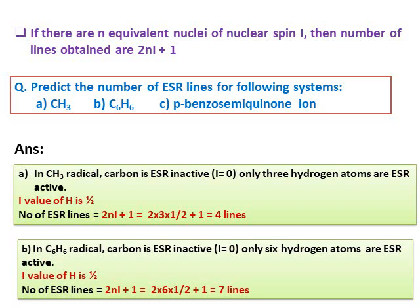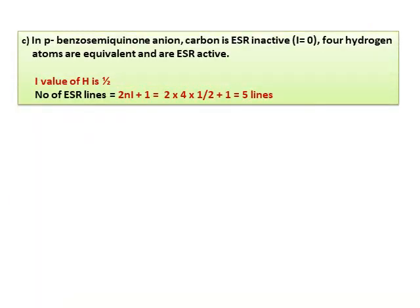For benzene (C6H6): carbon is ESR inactive (I=0). Only the six equivalent hydrogen atoms are ESR active with I=1/2. The number of ESR lines = 2×6×(1/2)+1 = 7. For para-benzosemiquinone: carbon is ESR inactive, and there are 4 equivalent hydrogen atoms that are ESR active with I=1/2. The number of ESR lines = 2×4×(1/2)+1 = 5.